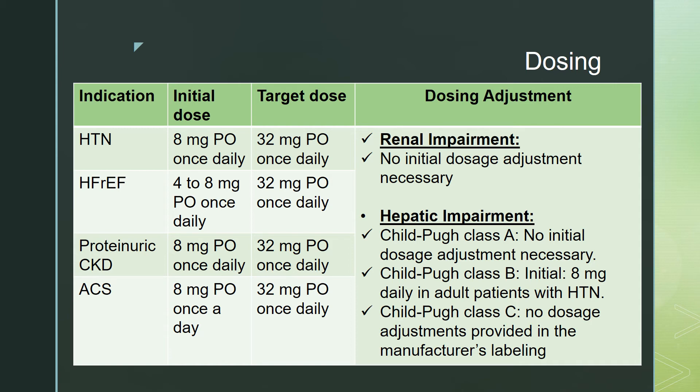In addition, patients with renal impairment or mild hepatic impairment, no initial dose adjustment is necessary. Patients with Child-Pugh class B or moderate hepatic impairment, the initial dose is 8mg a day in adult patients with hypertension. In Child-Pugh class C or severe impairment, no dose adjustment is provided in the manufacturer labelling.